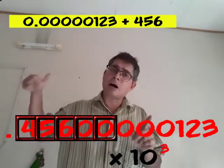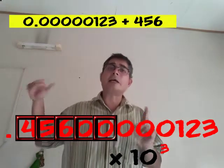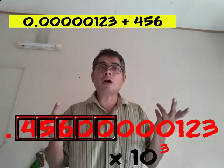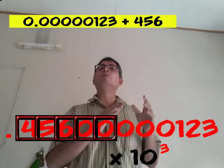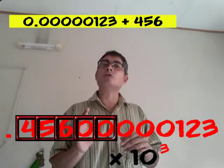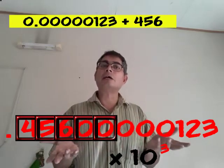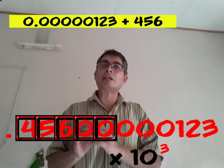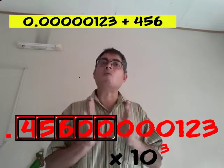All the other significant digits, those 1, 2, 3 are coming far towards the right end. And as a result, you will not store them at all. So what will be the answer? If you add 456 plus 0.0000123, you will get the answer 456. That part, that extra thing that you added, is completely wiped out.